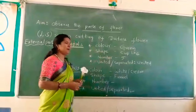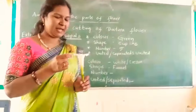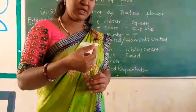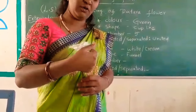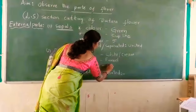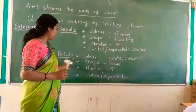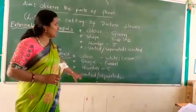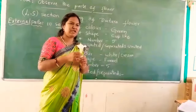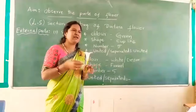Number of petals? Five. Shall we count? Like this — 1, 2, 3, 4, 5. Number of petals in datura is five. Do the petals unite or separate here? United — they are not separated.